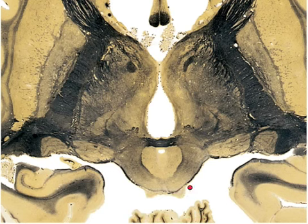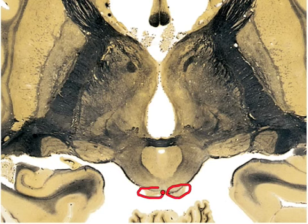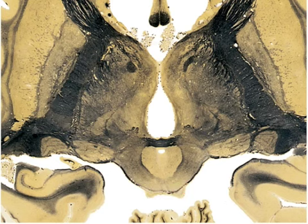We have the inferior colliculus right here and right there. The inferior colliculus is used for detecting changes in the auditory environment.